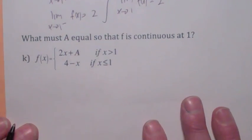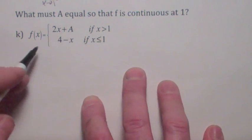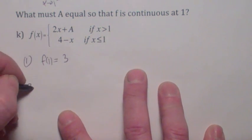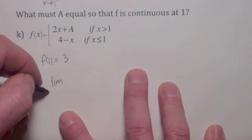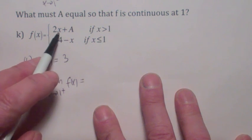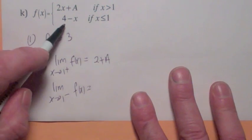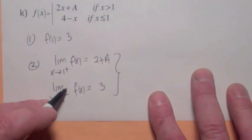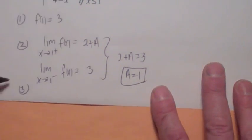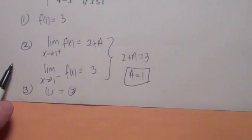One more. This one's interesting — what must a be, assuming a is a positive constant, so this function is continuous at x equals 1? Let's go through the three conditions. What is f of 1? It equals 3. Now for the limit as x goes to 1 from the right, that expression is getting close to 2 plus a. And the limit from the left is getting close to 3. For the limit to exist, 2 plus a has to equal 3, which means a equals 1. Notice if a equals 1, both one-sided limits equal 3, and that equals the function value. So a must equal 1 for this function to be continuous.